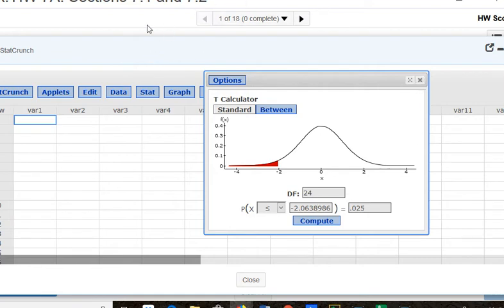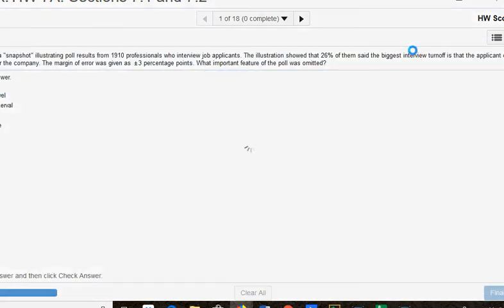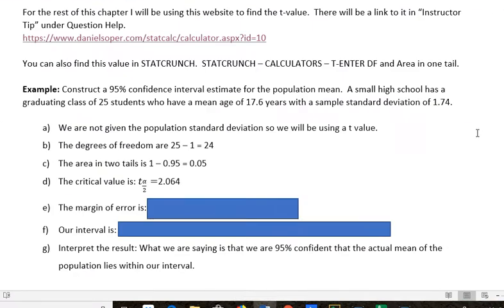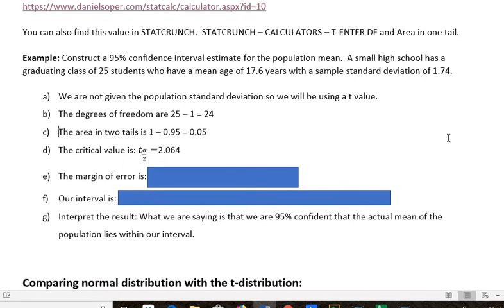So whether you want to use StatCrunch, or whether you want to use Daniel Soper, or if you have a nice calculator like a TI-84 or 89, or an Inspire, or some other great calculator, that's good. But you can't do it on the calculator that I use in this class, which is the 36X Pro.